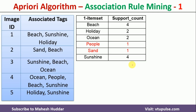In the first step, we need to get the support count for individual itemsets, that is 1-itemsets. Beach, holiday, ocean, and so on are the 1-itemsets. We count how many times each item appears and write it in the second column. Beach appears 4 times, so I have written 4. Similarly, holiday appears 2 times. I write the frequency of each 1-itemset in this way.